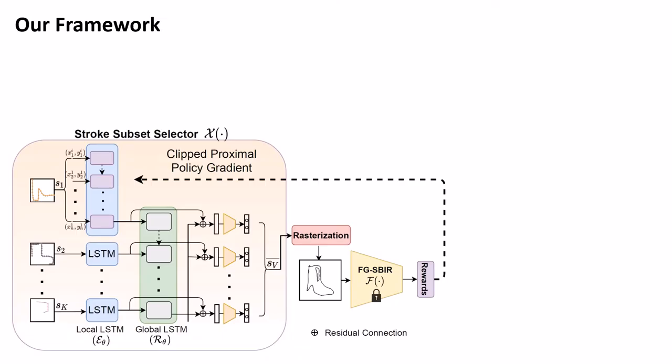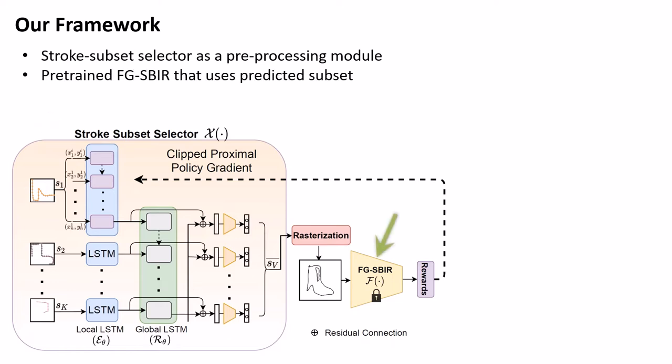Our framework has two modules connected in cascade: a stroke subset selector as a pre-processing module working in vector space, and a pre-trained FGSBIR that uses rasterized version of predicted subset for final retrieval. The first module takes a sketch vector as input and aims to produce an optimal subset of strokes.